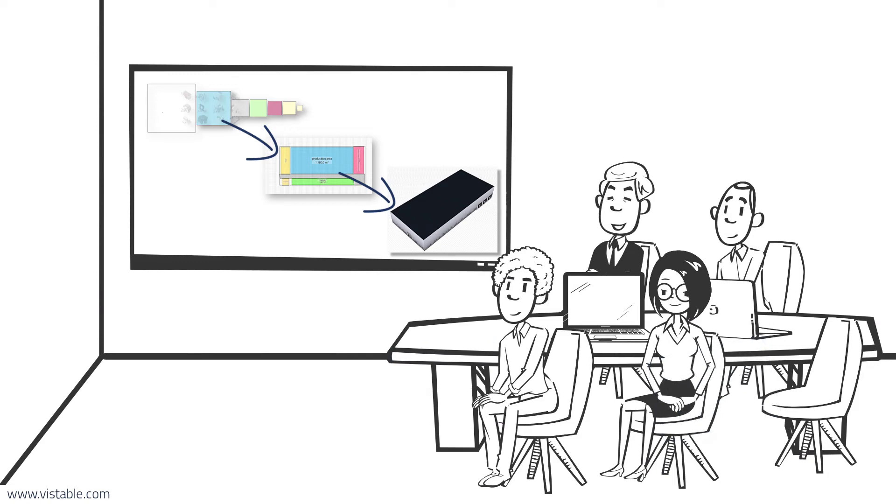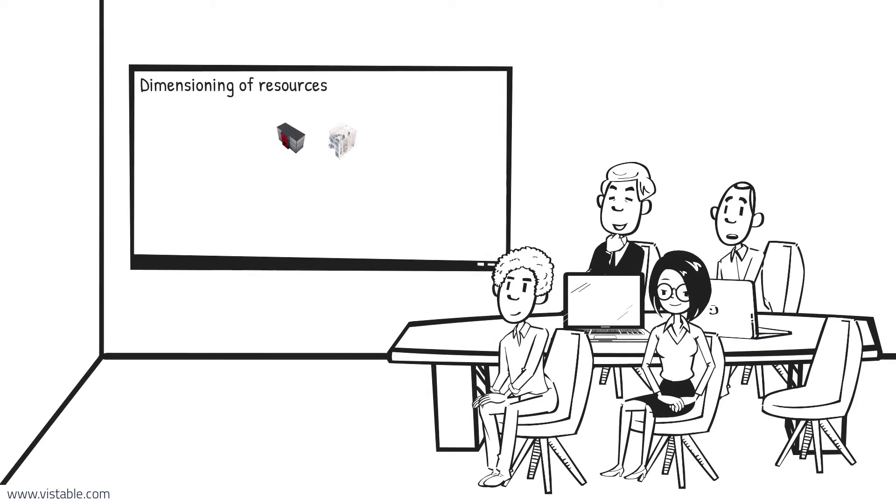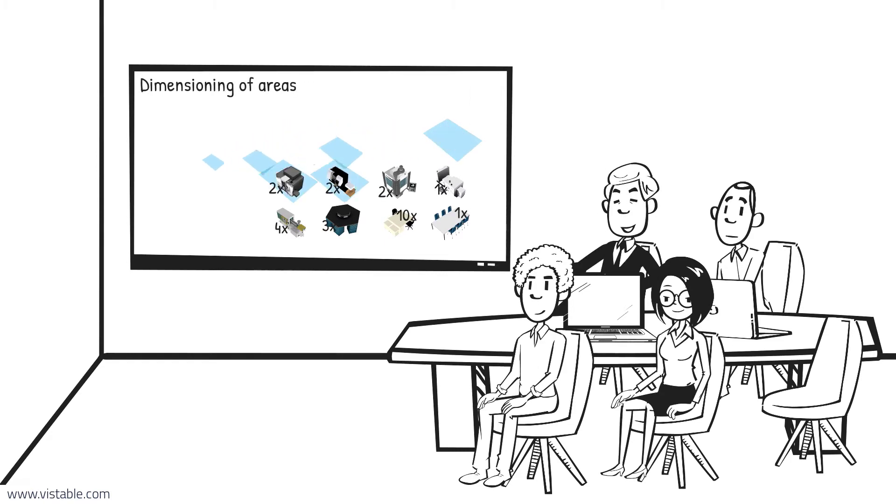But how does it work? We start by determining the necessary operating resources by type and quantity. Based on the operating resources, we can calculate the necessary areas.